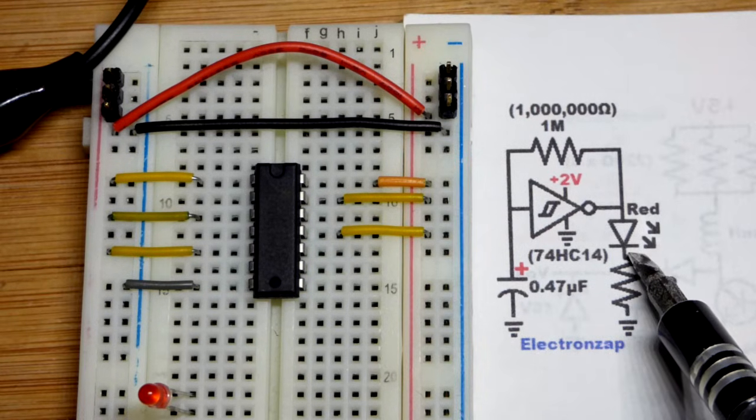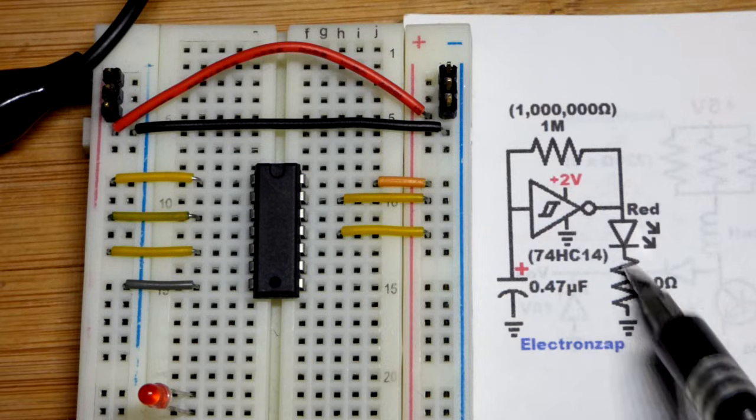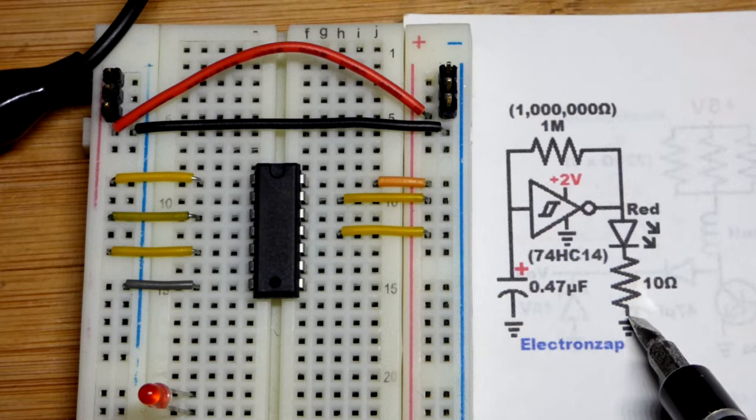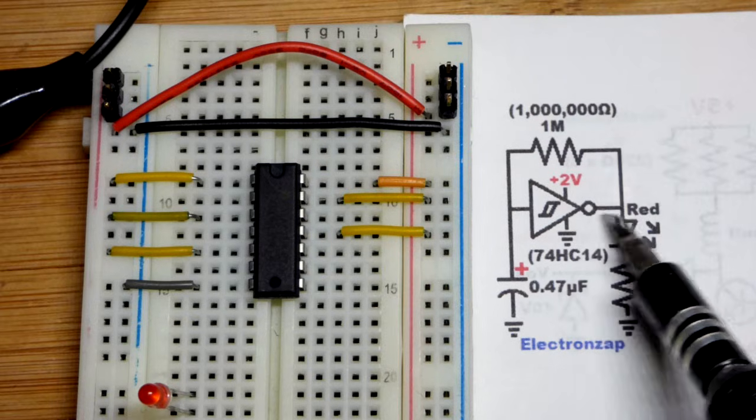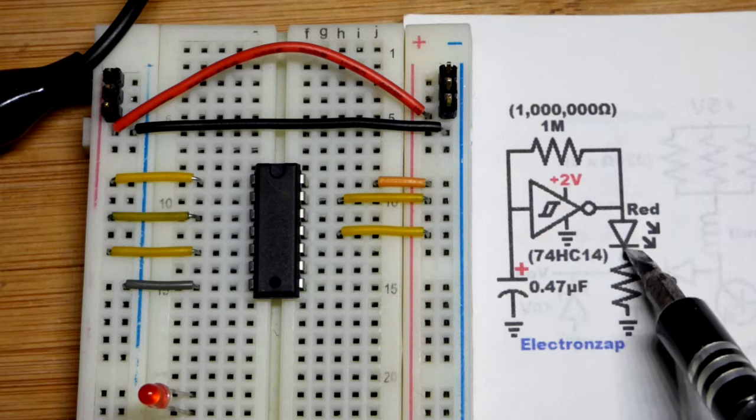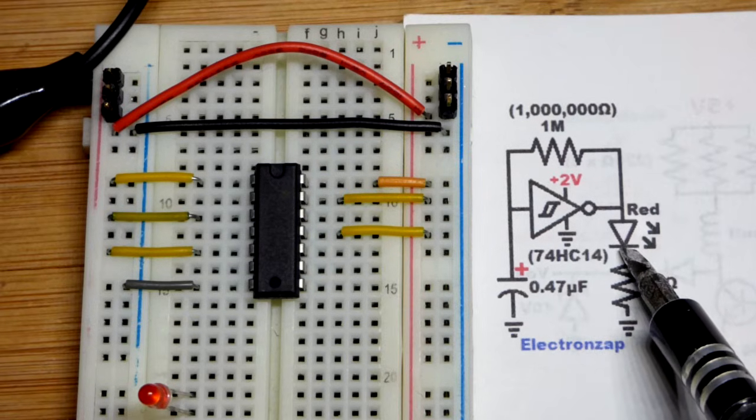2 volts is just enough to light a red LED, but I'm also going to add a 10-ohm resistor to just make sure if we have slightly higher voltage, we don't exceed the current for the red LED.